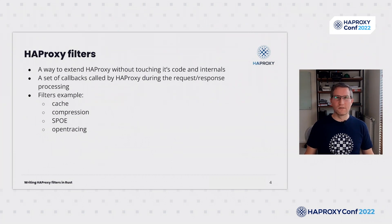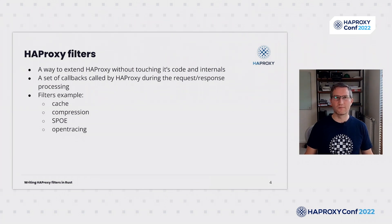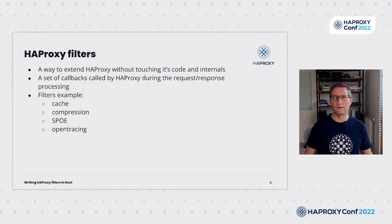HAPROXY filters is a low-level mechanism to extend HAPROXY without touching its core code and sometimes without knowing its internals. They were introduced in 1.7 to simplify HAPROXY by adding a new abstraction and replacing some parts with filters. To support filters, many callbacks have been added to HAProxy at different places, mainly around channel analyzers. Their purpose is to allow filters to be involved in the data processing from the stream creation and destruction to data forwarding.